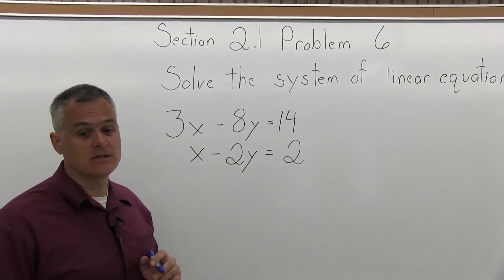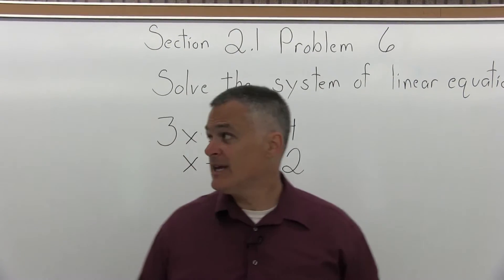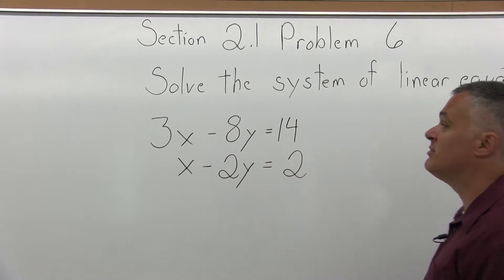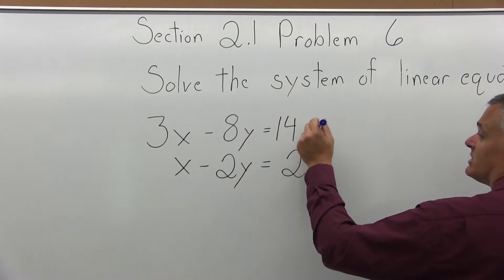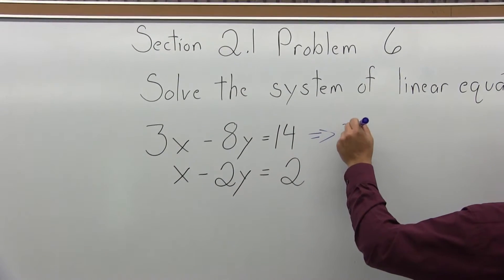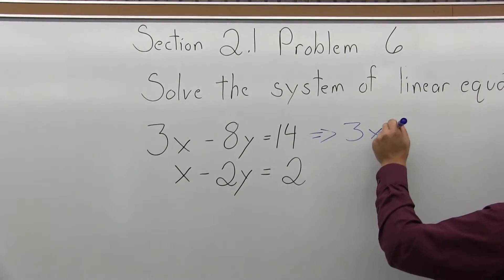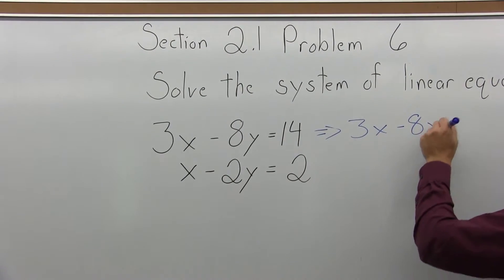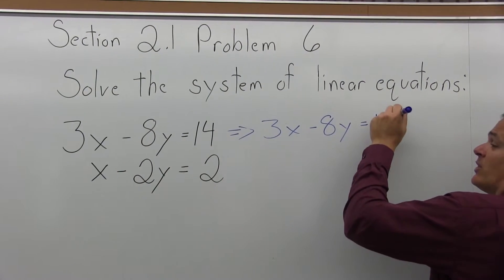If I cancel the x, the top equation can keep its 3x the way it is, and I won't change the top equation at all. It will stay 3x minus 8y equals 14.